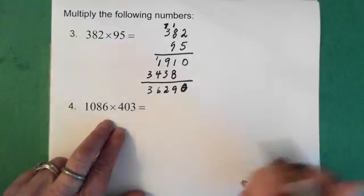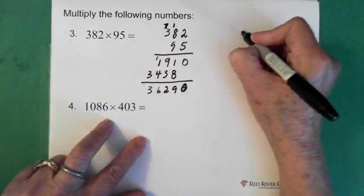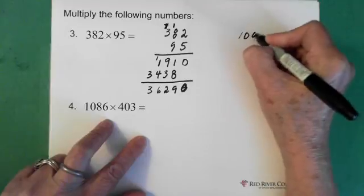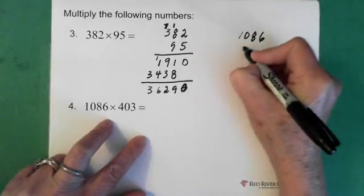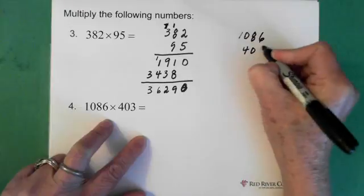Now, a question with 0's in it. I'm going to put this up over here. So 1, 0, 8, 6 and 4, 0, 3.